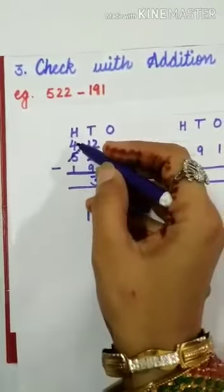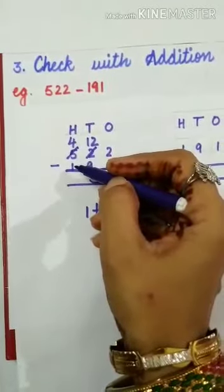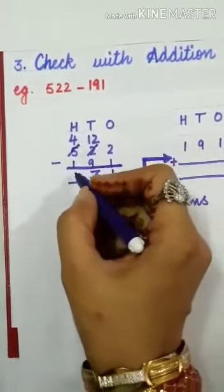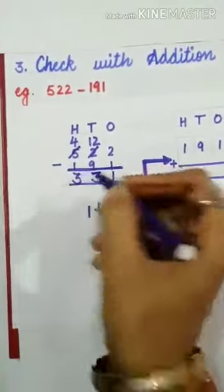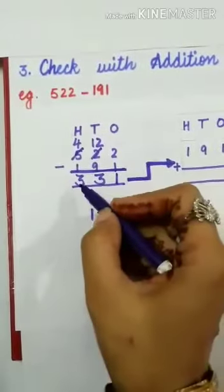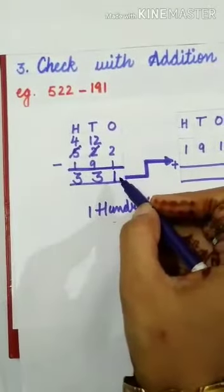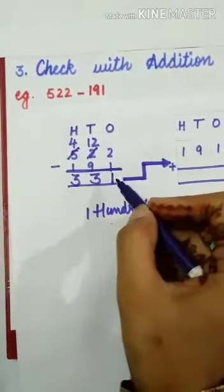Now again, 4 minus 1. 4 minus 1, the predecessor of 4 is 3. So we get 3 here. Our answer is 331. We can check this answer also.